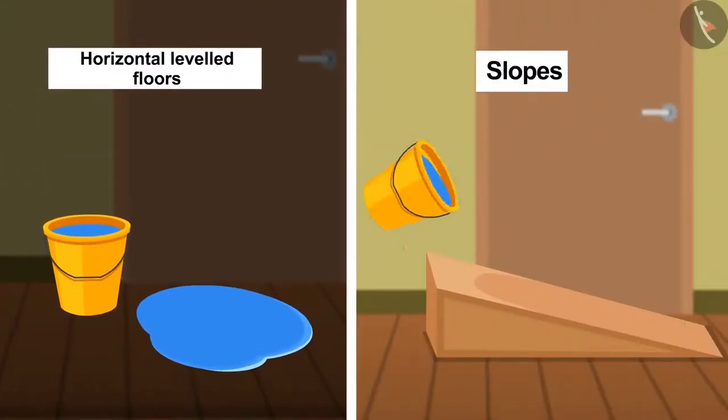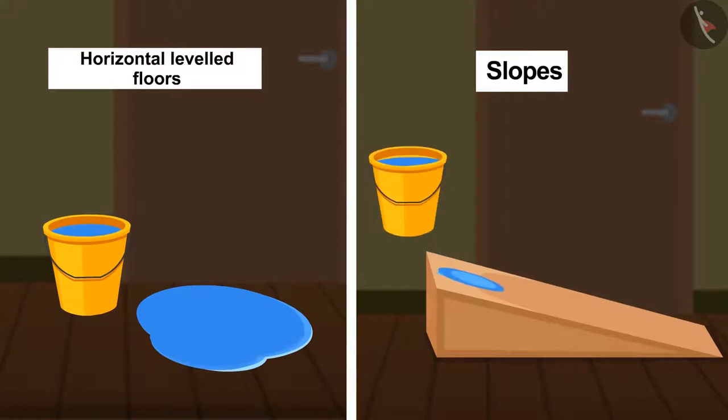In the case of slopes, no extra force is required, whereas despite applying force on the horizontal floor, water stops flowing as soon as the effect of that force tends to zero.